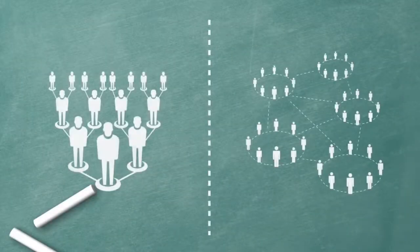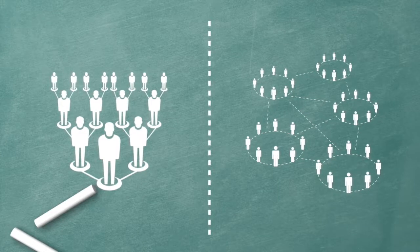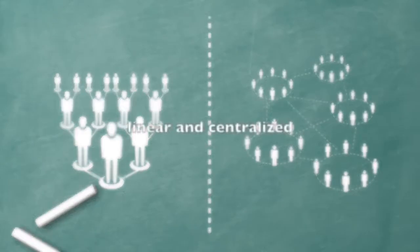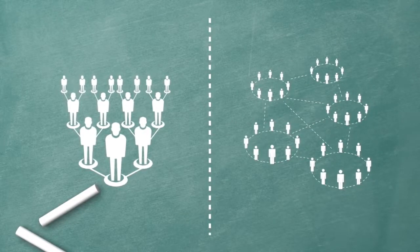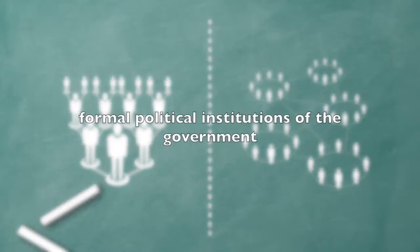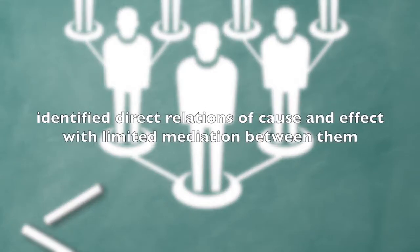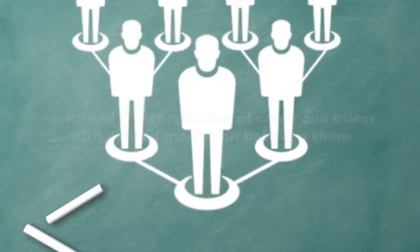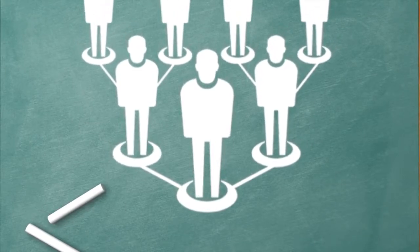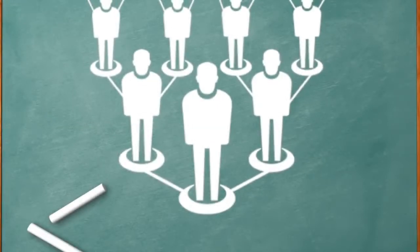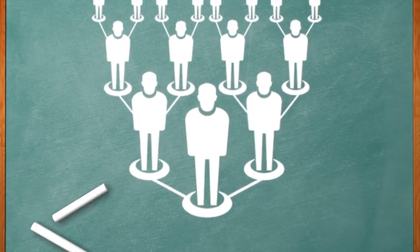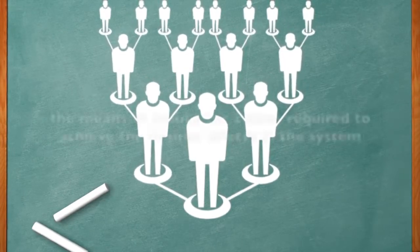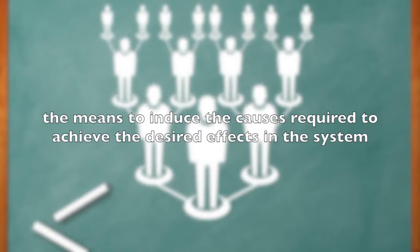The distinction between linear and non-linear defines two different rule patterns within a system: one which is linear and centralized, and the other which is distributed and non-linear. This typically maps onto the divide within socio-political systems between the formal political institutions of government and civil society at large. In the linear dimension, there are direct relations of cause and effect. Small changes can only cause small effects and big changes will cause big effects. This direct cause-and-effect relationship can be used to control the organization via a centralized regulatory system that has the means to induce the causes required to achieve desired effects.